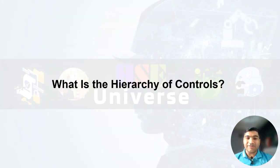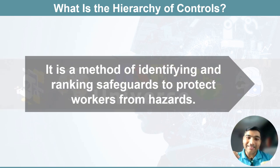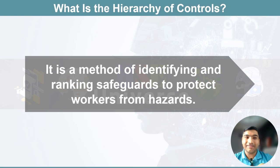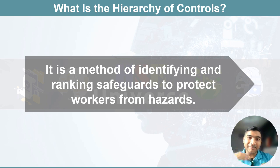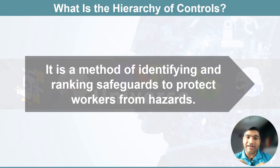So what exactly is this Hierarchy of Controls? Well, it is a structured framework that helps us to manage risk in the workplace and beyond. By definition, it is a method of identifying and ranking safeguards to protect workers from hazards. It's like a toolbox with different tools in it, and each tool is designed to address hazards in a specific order of priority.